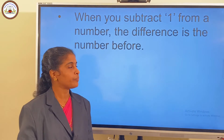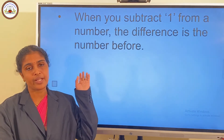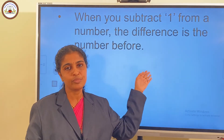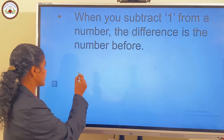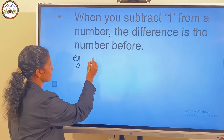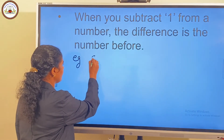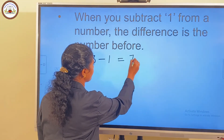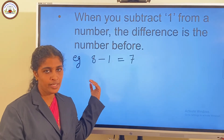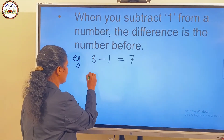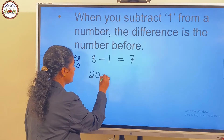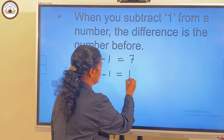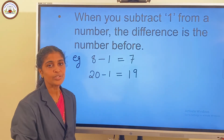Next we have the third property. When you subtract 1 from a number, the difference is the number before it. For example, 8 minus 1 is equal to 7. 7 is the number before 8. 20 minus 1 is equal to 19. 19 is the number before 20.